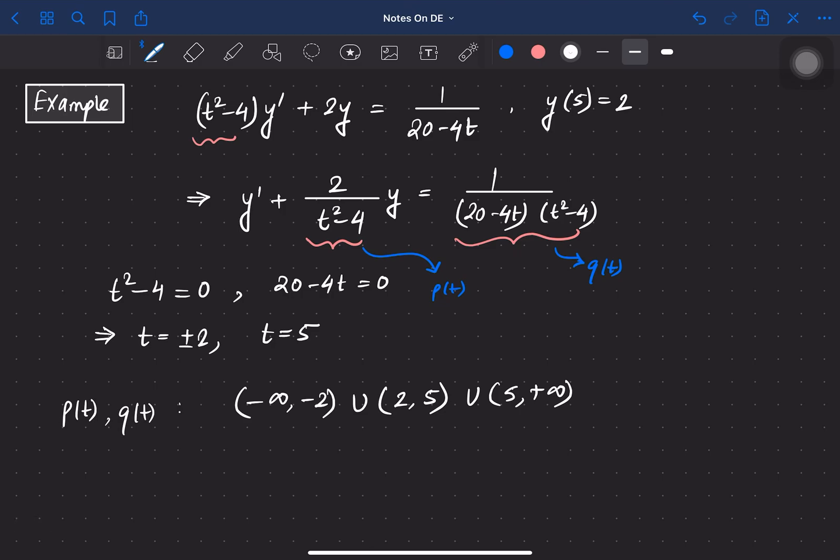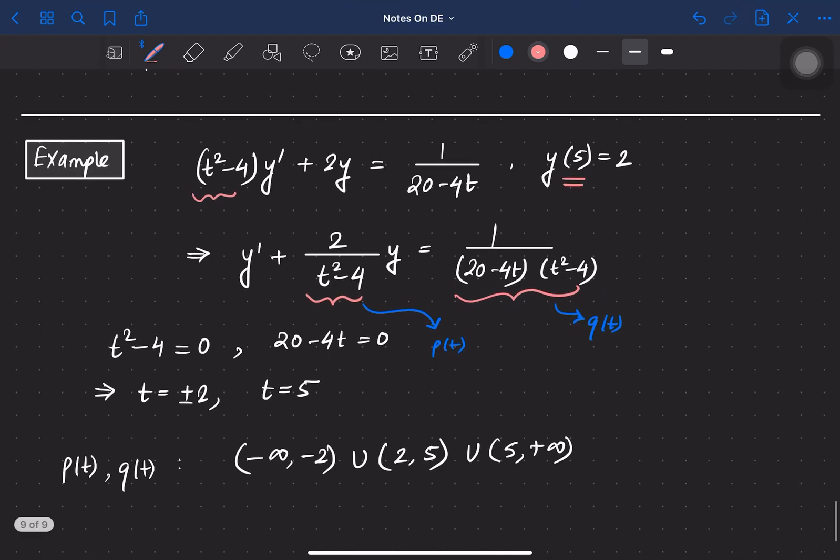at these intervals we have a solution of the differential equation, but we can't comment on uniqueness because the initial value given in this problem is at t = 5, which is a discontinuity point. Let us change this initial value. Suppose instead we are given y(4) = 2. Then